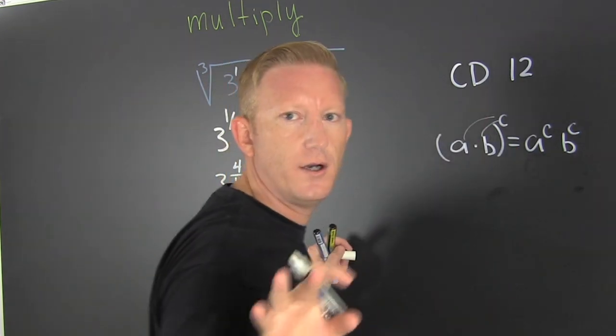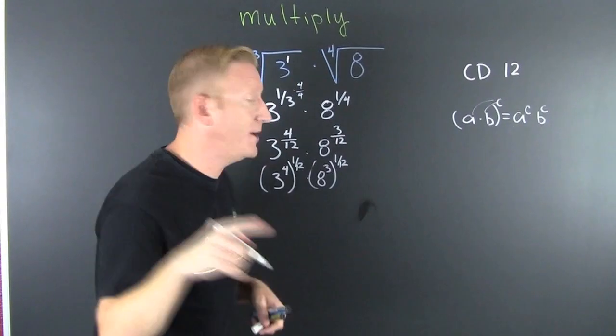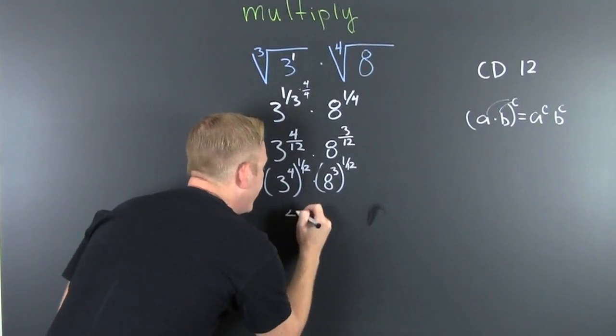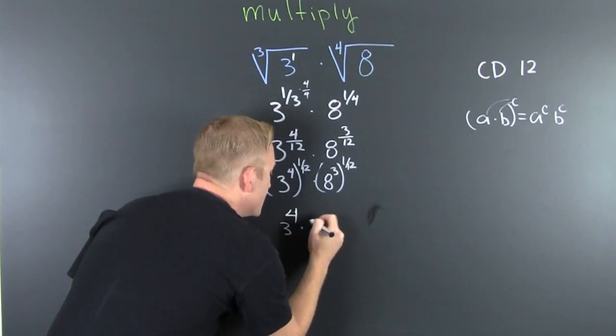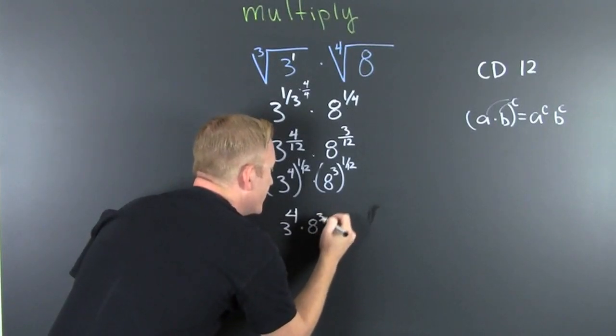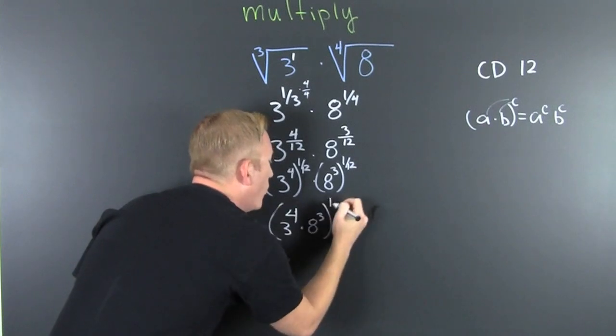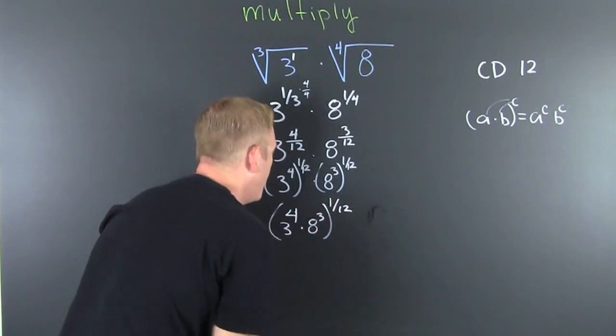After we undo that, I'm going to have 3 to the fourth times 8 to the third, all of that to the one-twelfth power.